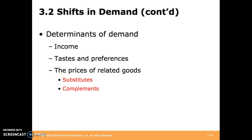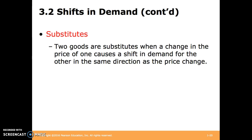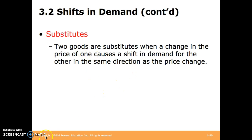Several determinants of demand include income, tastes and preferences, and the prices of related goods — that's substitutes or complements. Substitutes: two goods are substitutes when a change in the price of one causes a shift in demand for the other in the same direction. If the price of one good increases, we buy more of its substitute instead. For example, Xboxes and PlayStations are substitutes — if the price of a PlayStation goes up, you might be more inclined to buy an Xbox.